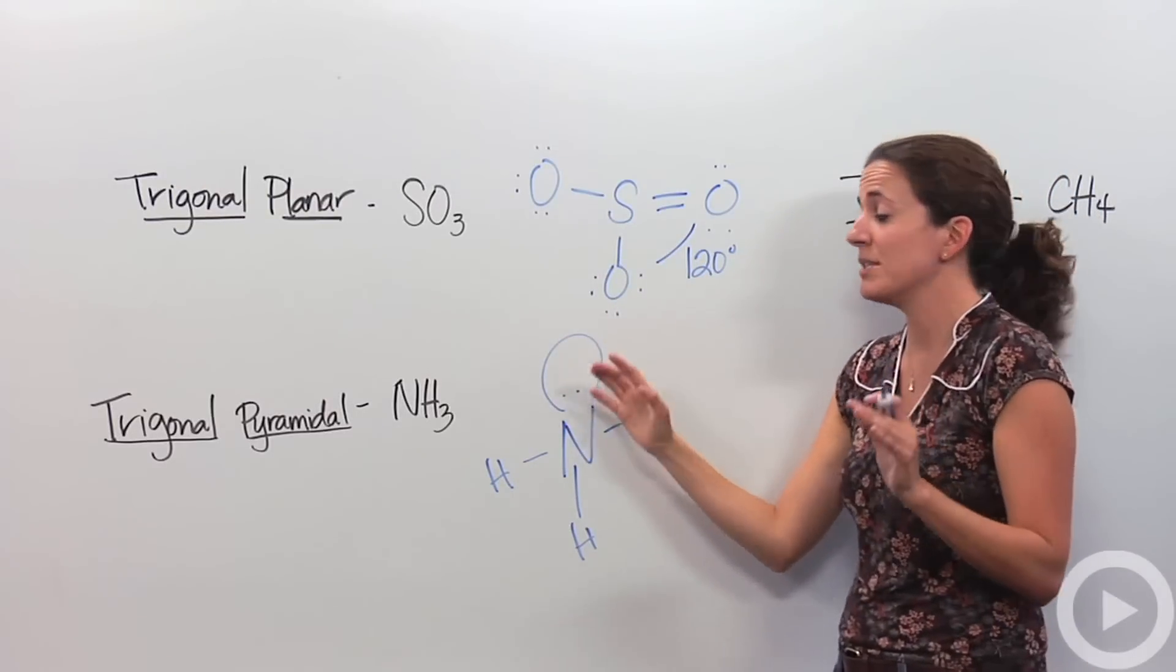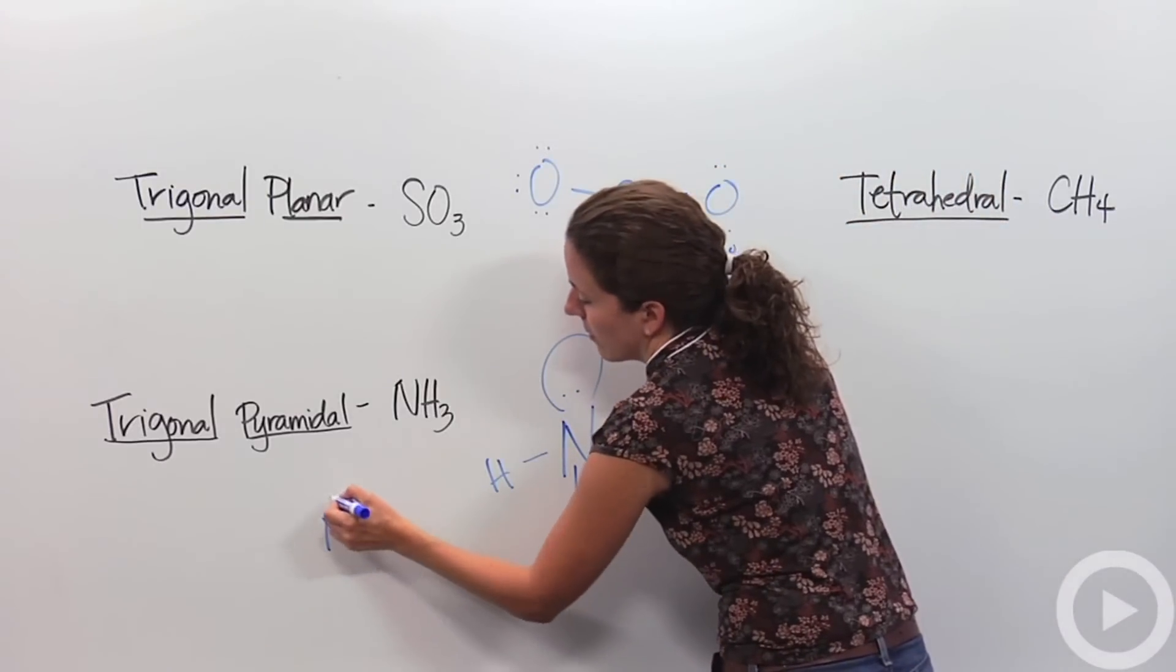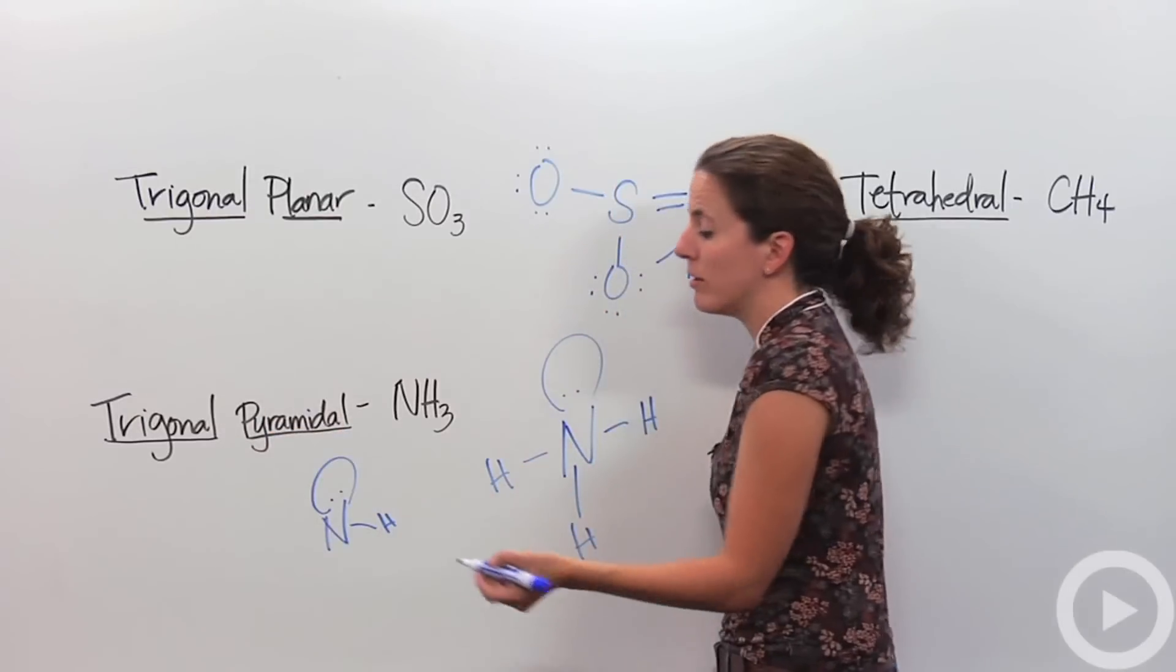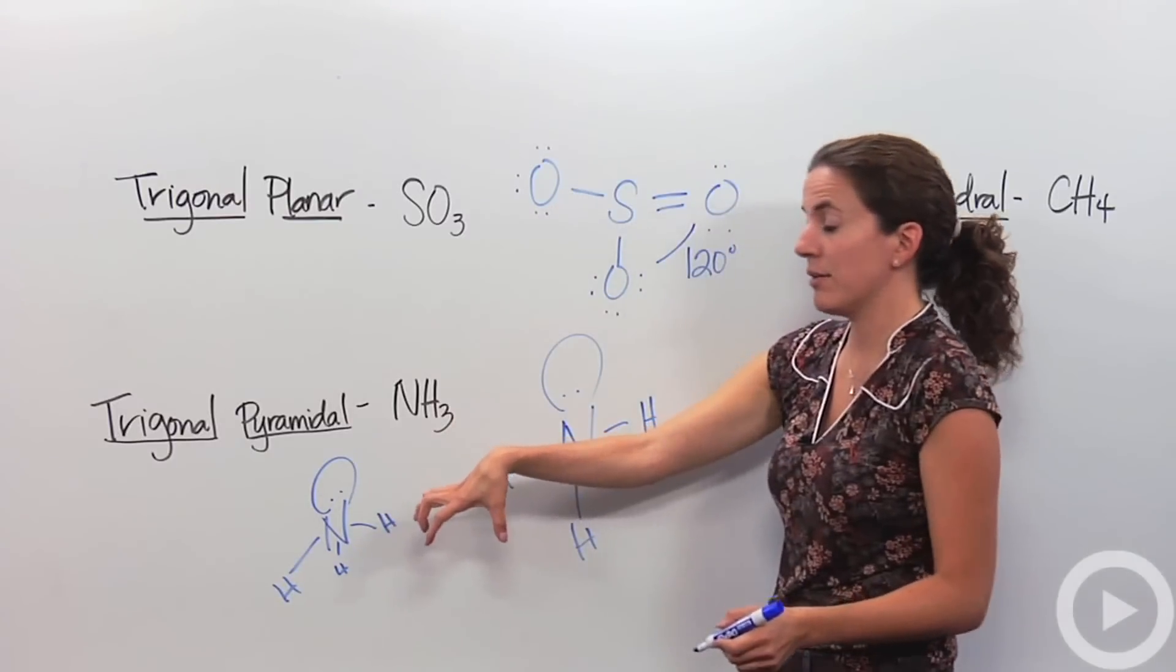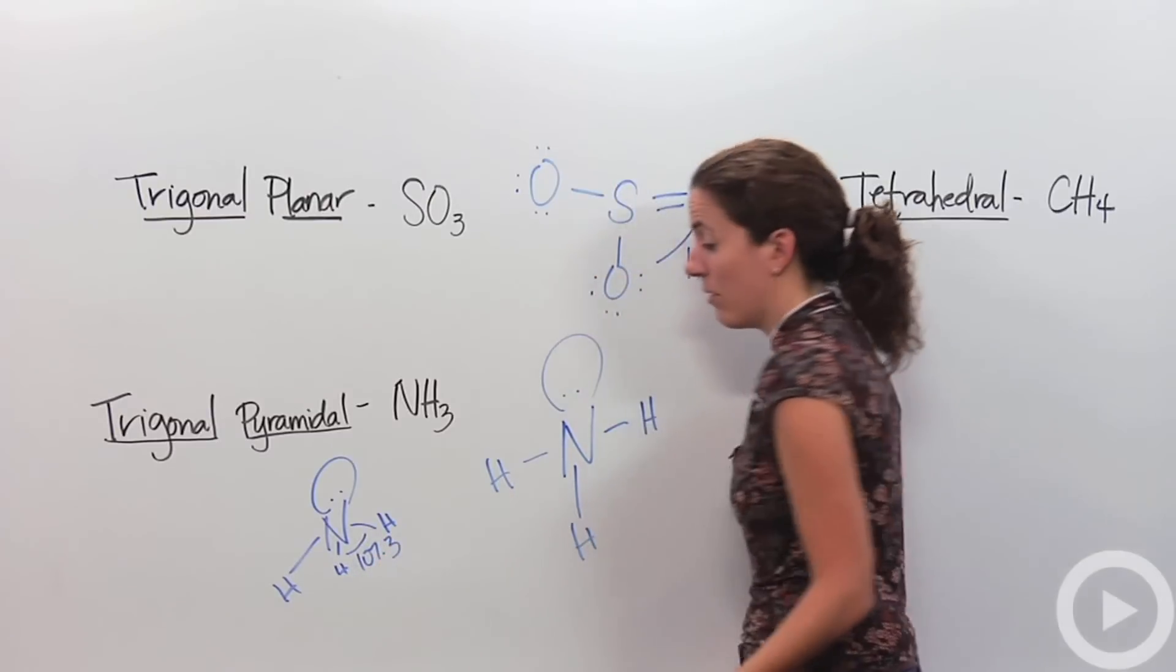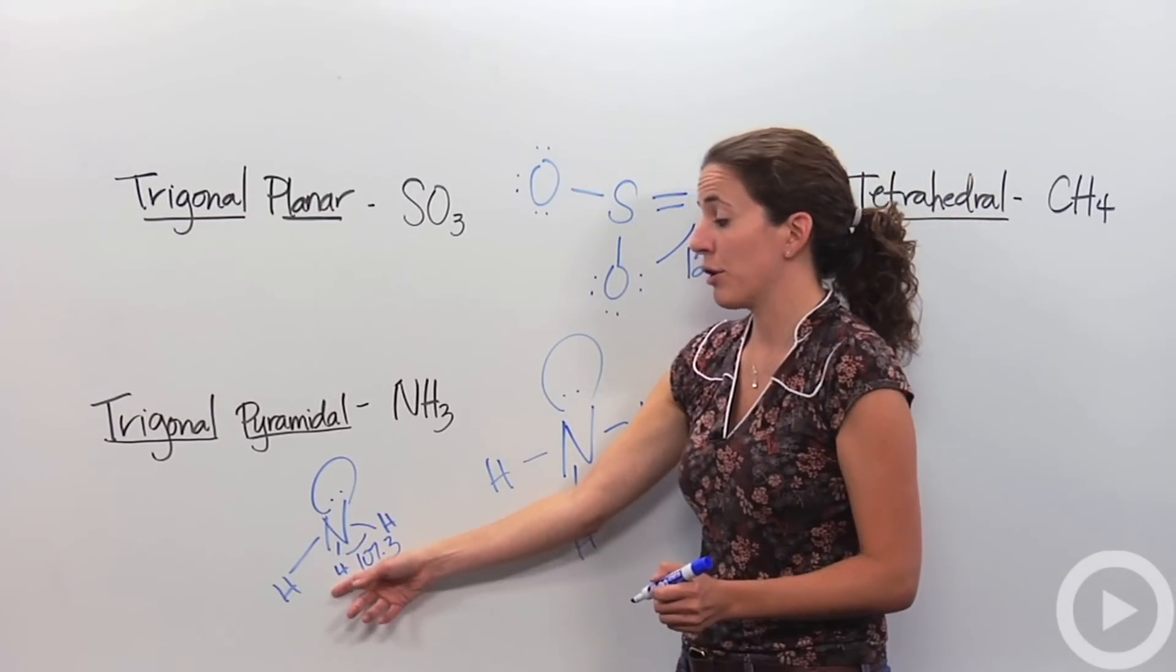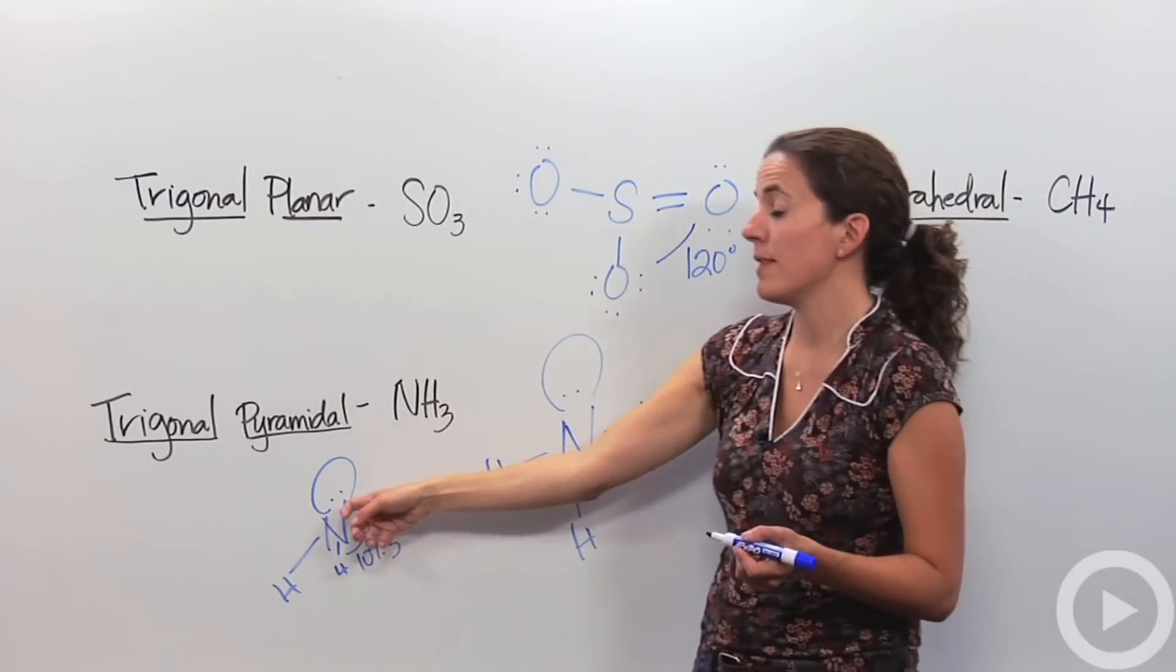These guys are going to go crazy and they want to have a lot of space. They're going to push those hydrogens down into a pyramid shape, hence pyramidal. It's going to kind of sit on it. And the bond angle between these hydrogens is 107.3. So this is a trigonal pyramidal. Notice the massive difference is lone pair of electrons. This one doesn't have them. This one does.